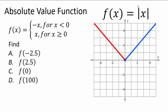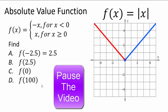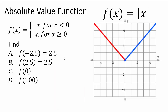The notation uses vertical bars with x in the middle — that's the absolute value. For f(−2.5): negative 2.5 is less than 0, so it's negative of negative 2.5, which is positive 2.5. f(2.5) is 2.5, f(0) is 0, f(100) is 100, and f(−100) is also 100. So the absolute value function is this V-shape.